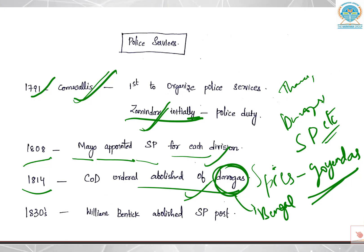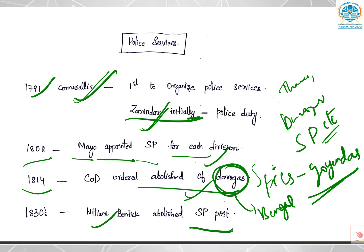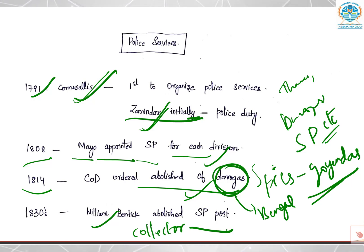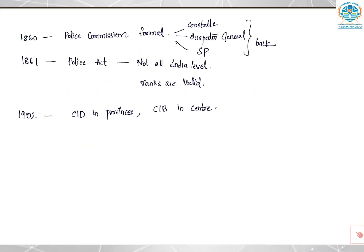In the 1830s, Lord William Bentinck abolished the SP post — that is Superintendents of Police. The Collector was made in charge of police duty instead. Again, this was a failure.